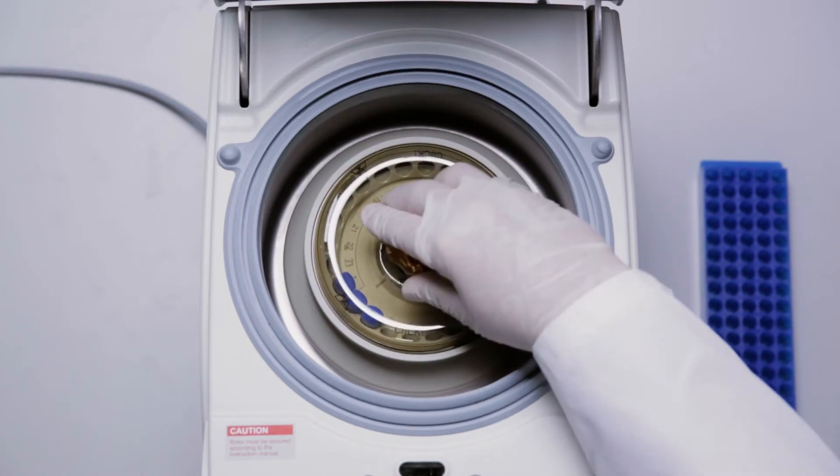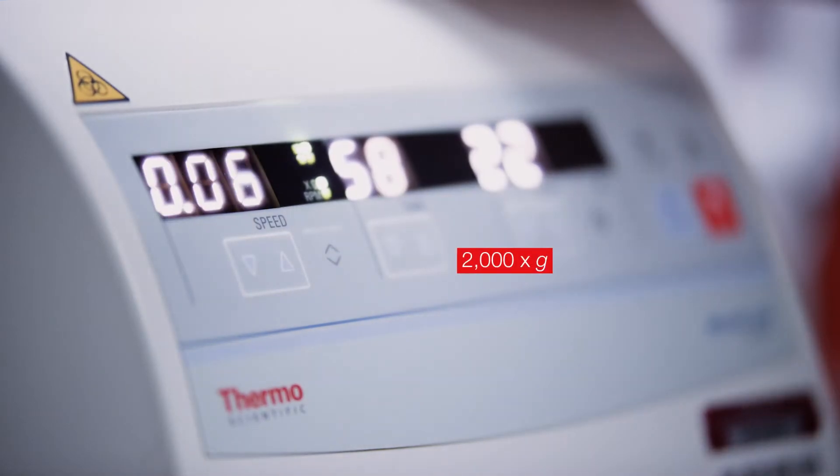To start, centrifuge each antigen standard vial at 2000 g for 10 seconds.